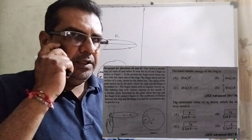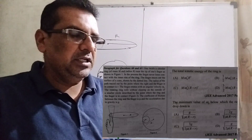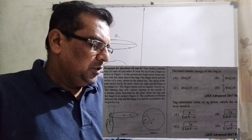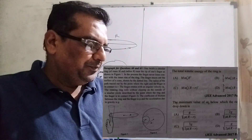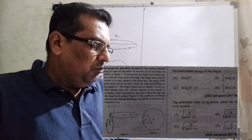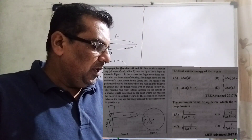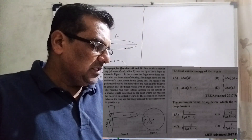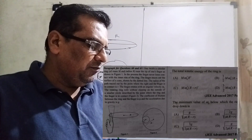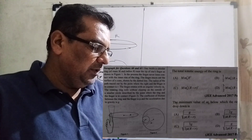The question here is a paragraph question — it means two questions are included in a single paragraph, so be careful. One spins a circular ring of mass M and radius R near the tip of one's finger, as shown in the figure.